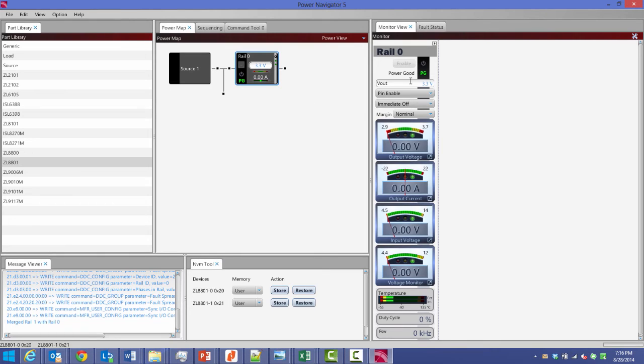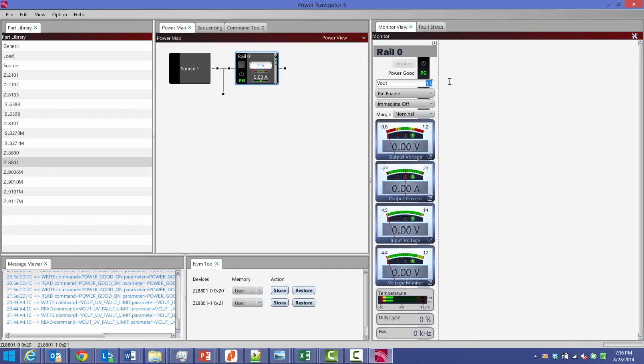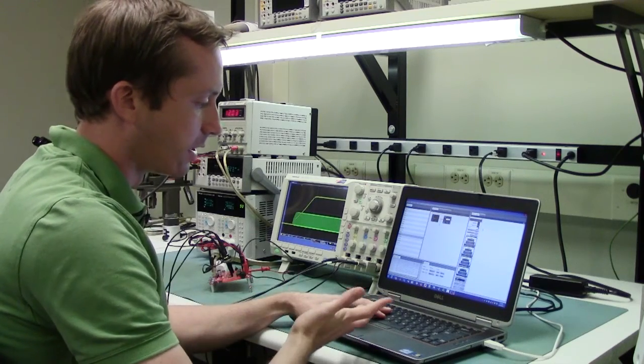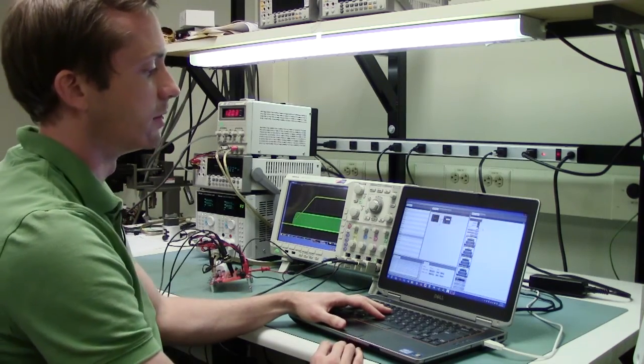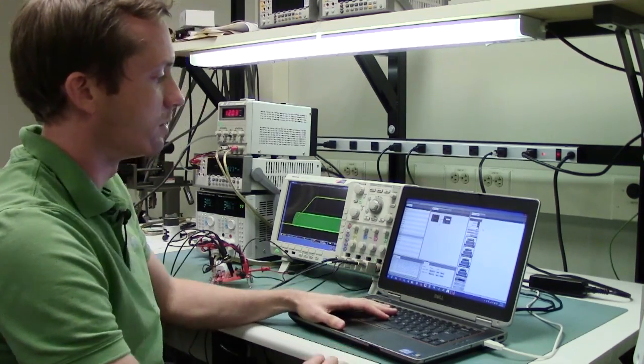If I want to adjust the output voltage, for example to one volt, I just type in one volt, and then I've got a one-volt output. So setting up current share with Power Navigator is very simple thanks to the ease of use of the GUI.